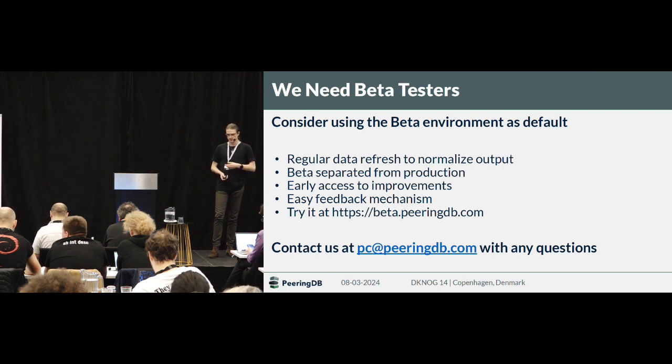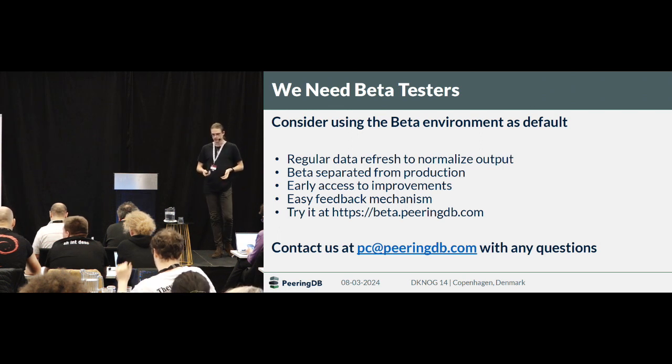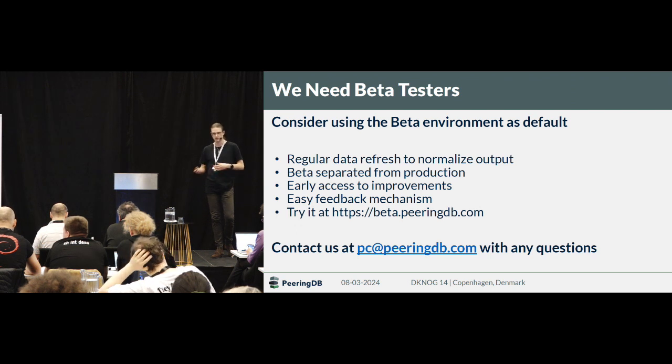You can access the beta at beta.peeringdb.com, and you can contact the product committee at productcom@peeringdb.com for any questions related to it.